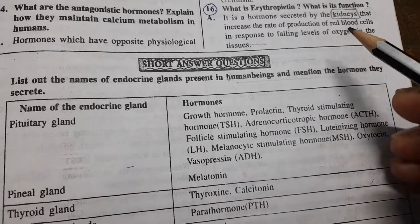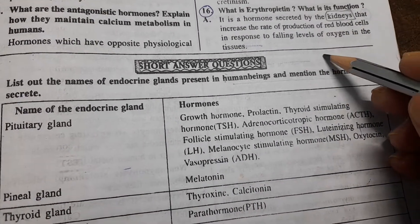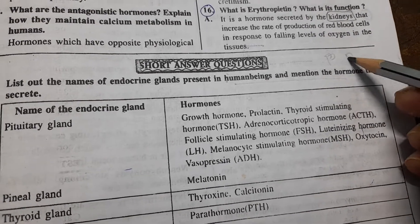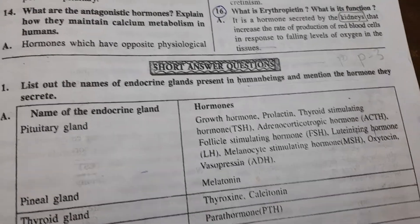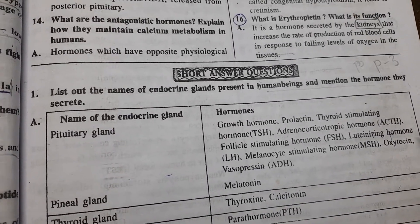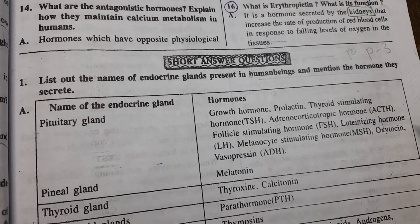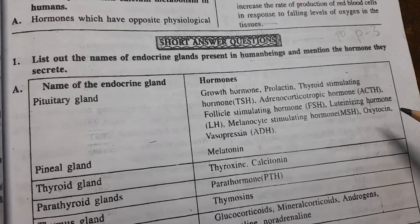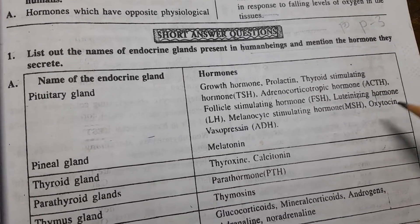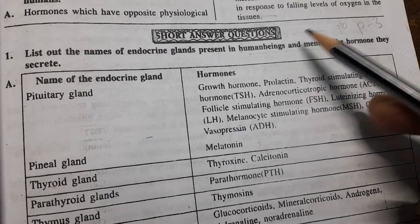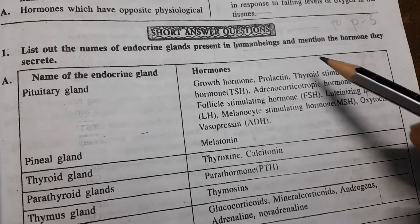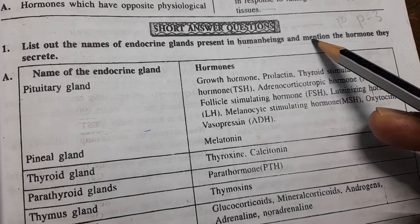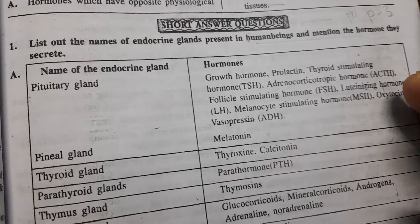Good morning all of you. This is part 3 of chemical coordination and integration — endocrine system and chemical coordination as per the state book. In this part, you are going to learn 4-mark short answer questions. List out the names of endocrine glands present in human beings and mention the hormones they secrete.